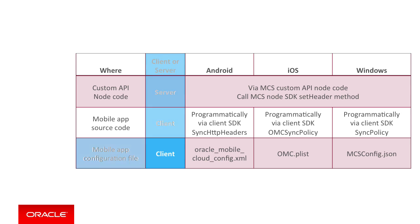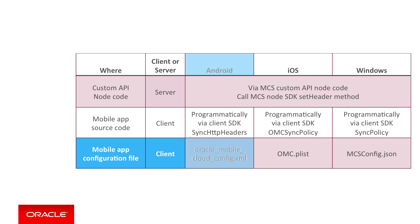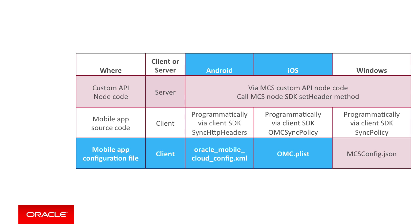One of the first places you can set them is on the client side, where you can define the policies in a configuration file for each mobile platform, delivered as part of the application itself. You store the sync policies in the Android Oracle Mobile Cloud config XML file, the iOS OMC plist file, or on Windows a file like mcsconfig.json.